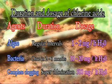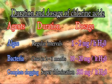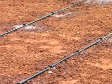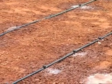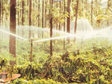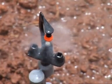Duration and dosage of chlorine treatment: For algae at regular intervals, 1 to 2 mg per litre of water; for bacteria once in 2 to 3 months, 10 to 20 mg per litre of water; for complete clogging of drippers, superchlorination once at 500 mg per litre of water. The main reason for uneven distribution of water in the system is the difference in water pressure. A minimum pressure of 1.5 to 2 kg per square cm is required for drip irrigation, while 3 to 5 kg per square cm for sprinkler irrigation. Sometimes water pressure reduces due to clogging of filters, so filters should be cleaned regularly.